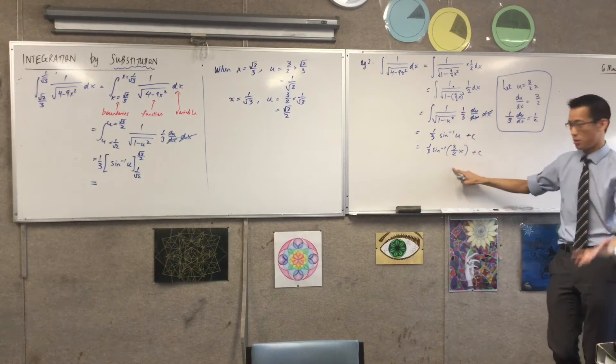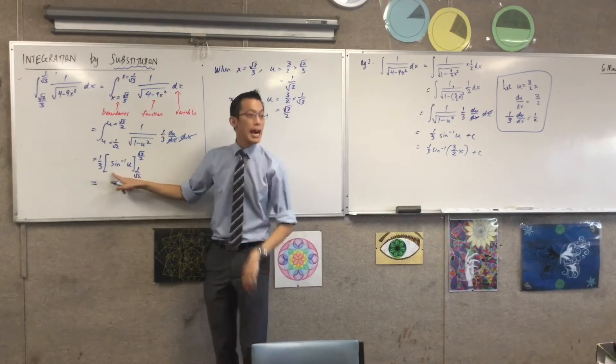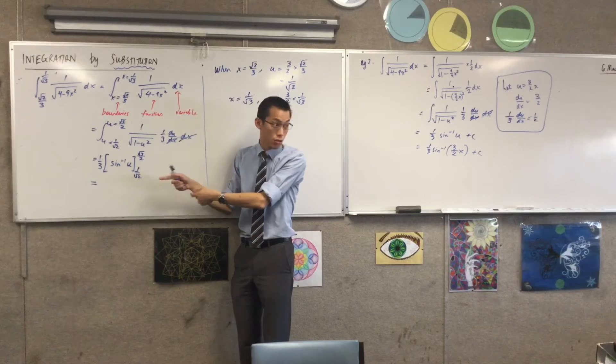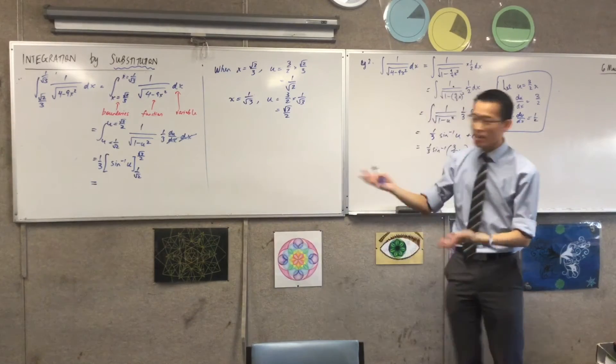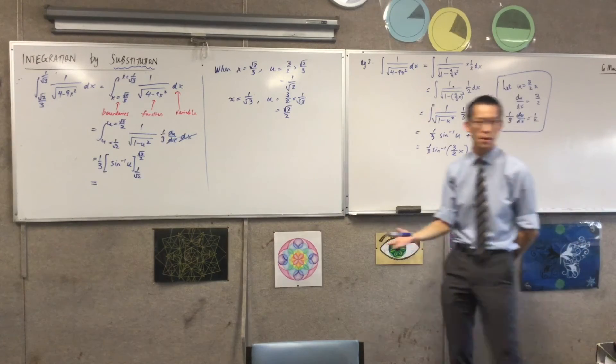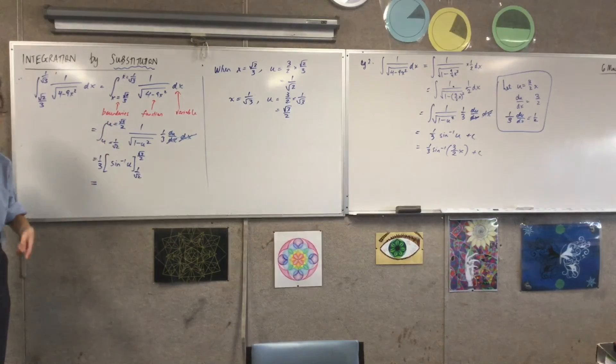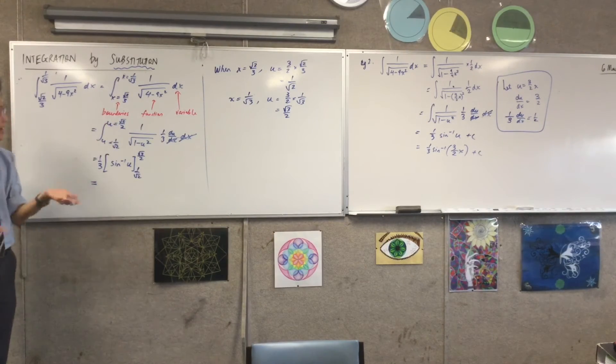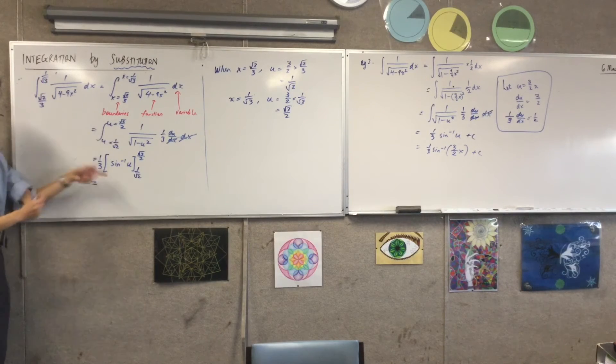But the whole point of it is that x, u, they're all dummy variables. They're all dummy variables, just standing in for some numbers. So we might as well change everything at once, and then you can just keep going through and not return back to your x's. The x's are never going to be there in the first place if it's a definite integral. Let's go ahead and evaluate.